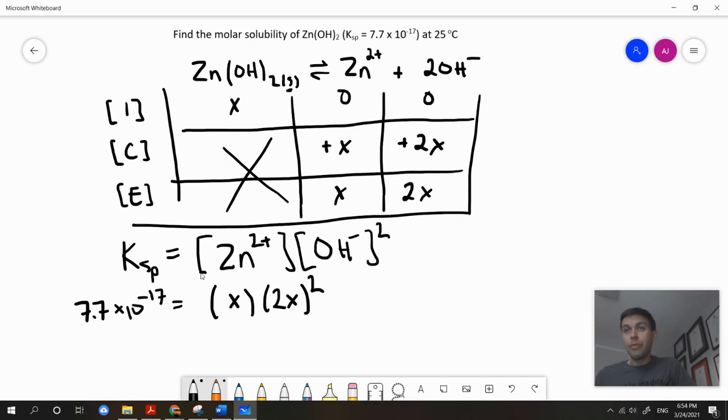So, remember first here, we need to apply the square to 2x and then we're going to multiply it by x. So, what we're going to get here is x times 4x squared and that's going to be equal to 7.7 times 10 to the negative 17.